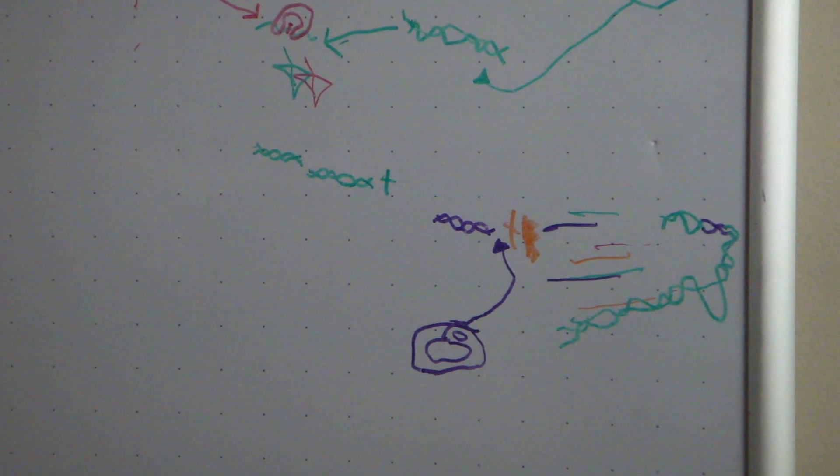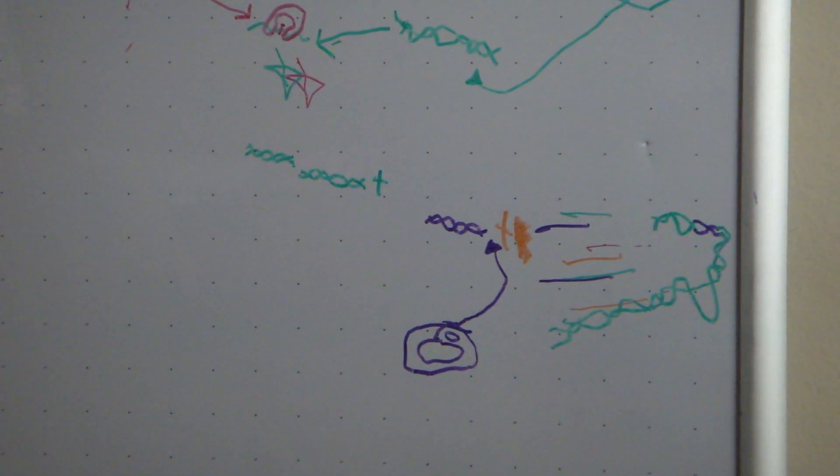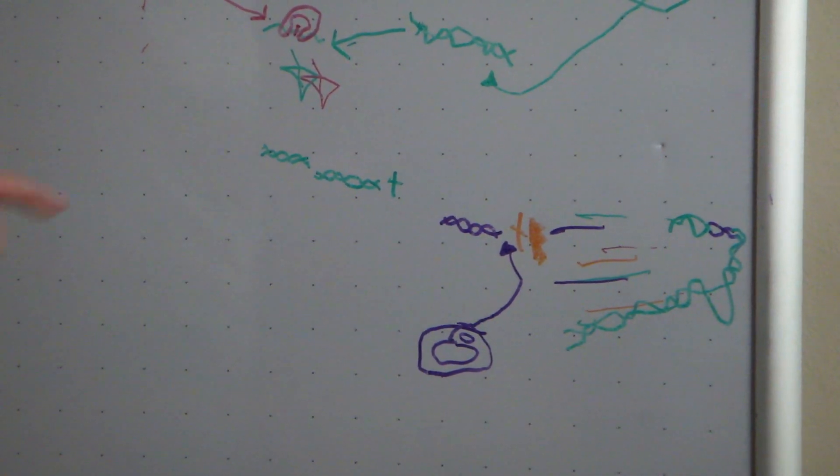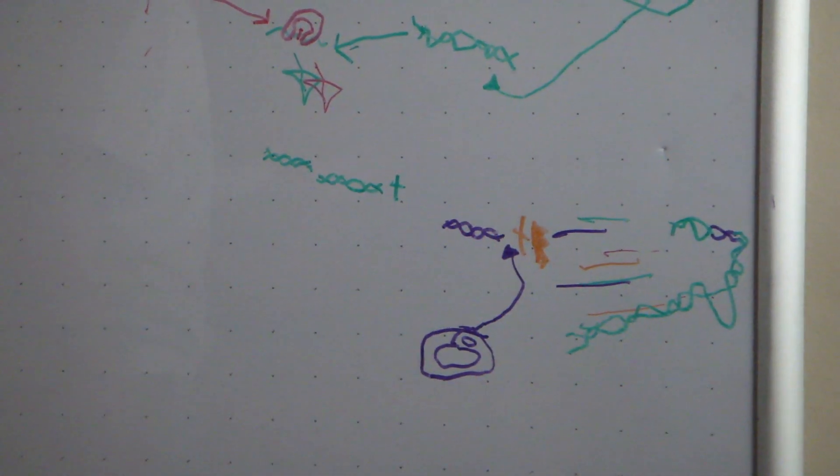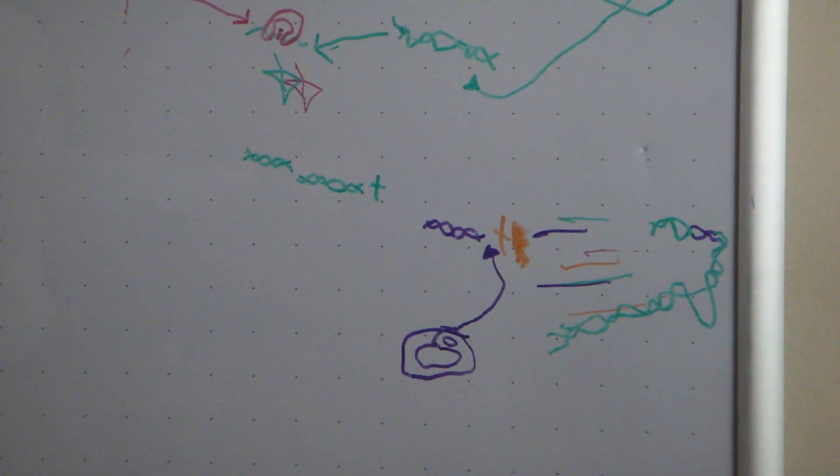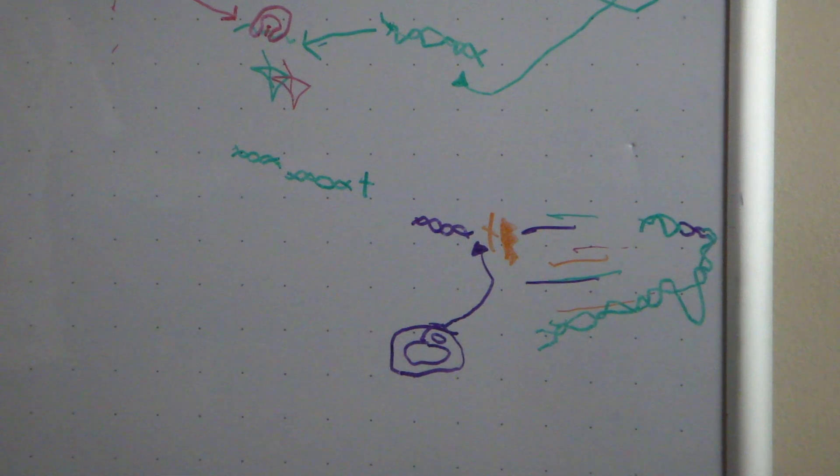And what are the yellow things there? Orange things right beside that? That's cold ligase. And what does it do? It ligates the ends together.